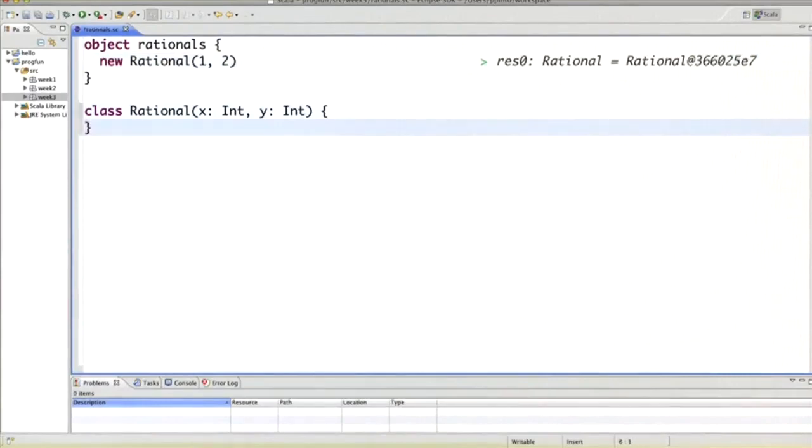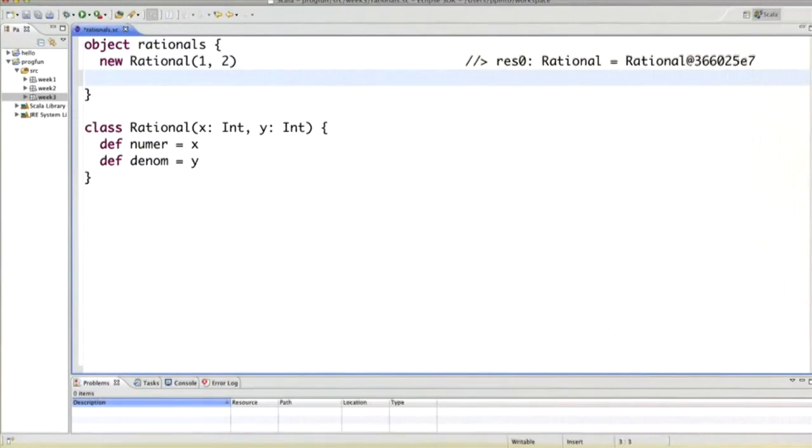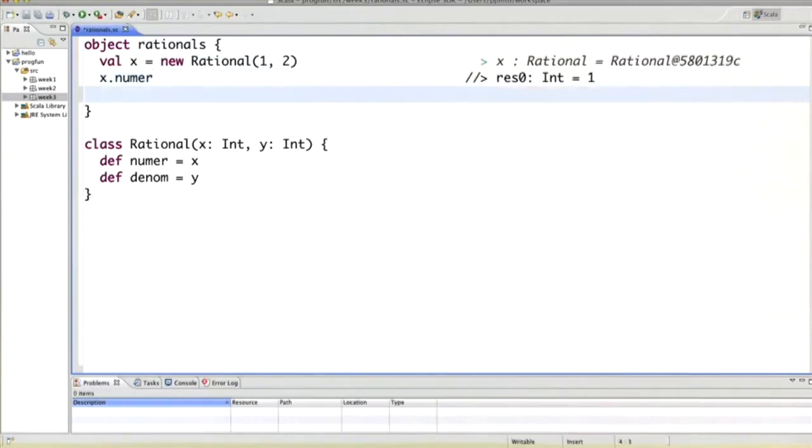So let's continue the rational example and define the numerator to be x and the denominator to be y. And what we could do then is we could call this rational x. We could take the numerator of x and what we see, no big surprise, is one. Whereas if we take the denominator, we would get two.